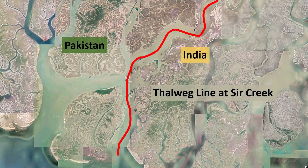The Talweg line also becomes the de facto border between two countries, or the deepest part of the navigable channel. If there are multiple Talweg lines or multiple navigable channels, then the median line of the principal navigable channel will become the de facto border.